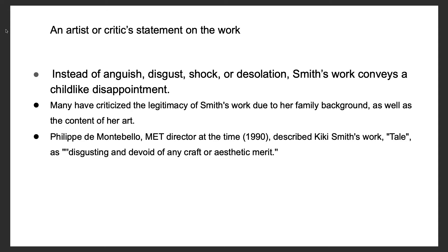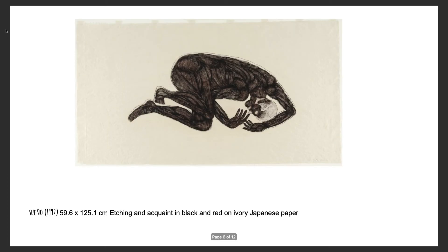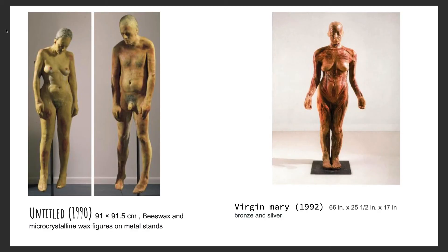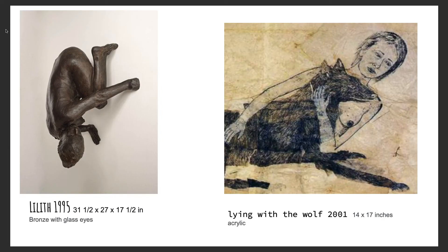Philippe de Montebello, the Metropolitan Museum of Art director at the time, in 1990 described Kiki Smith's work 'Tale' as disgusting and devoid of any craft or aesthetic merit. Here's an etching and aquatint in black and red on ivory Japanese paper. Some of her sculptures: 'Untitled,' 1990 — beeswax and microcrystalline wax figures on metal stands. 'Virgin Mary,' 1992 — bronze and silver. 'Lilith,' 1995 — a bronze sculpture mounted to the wall.